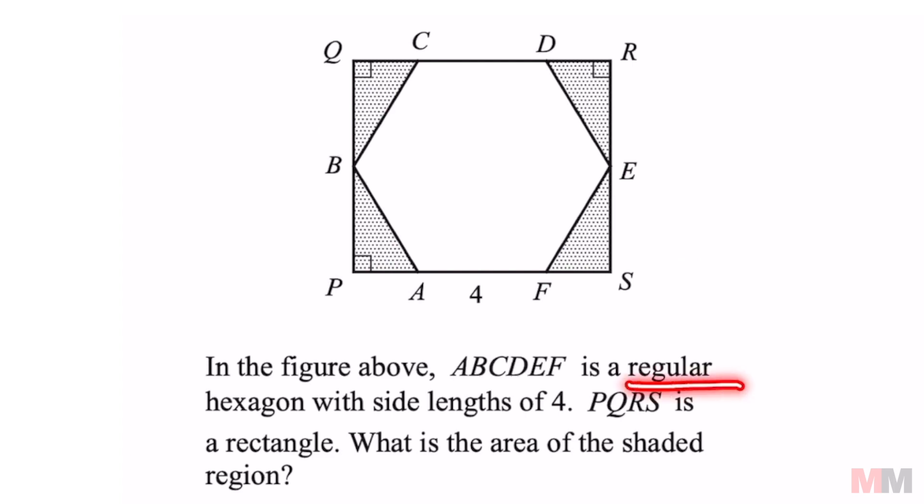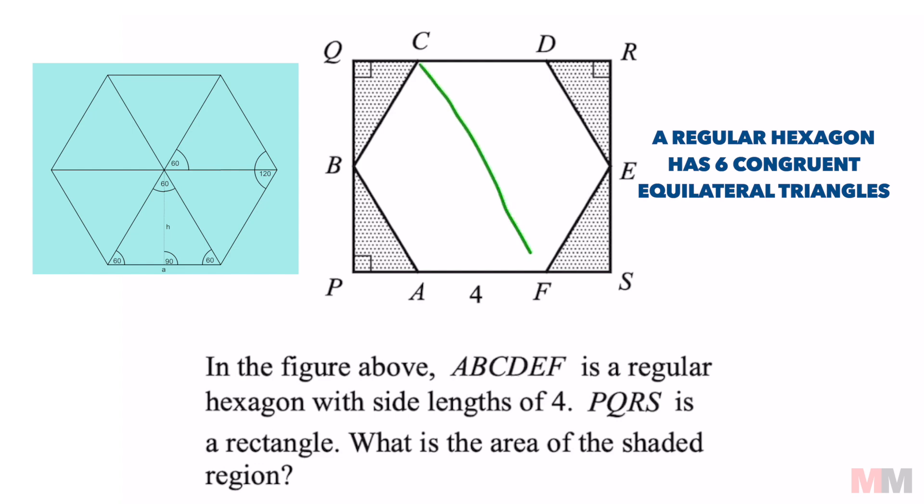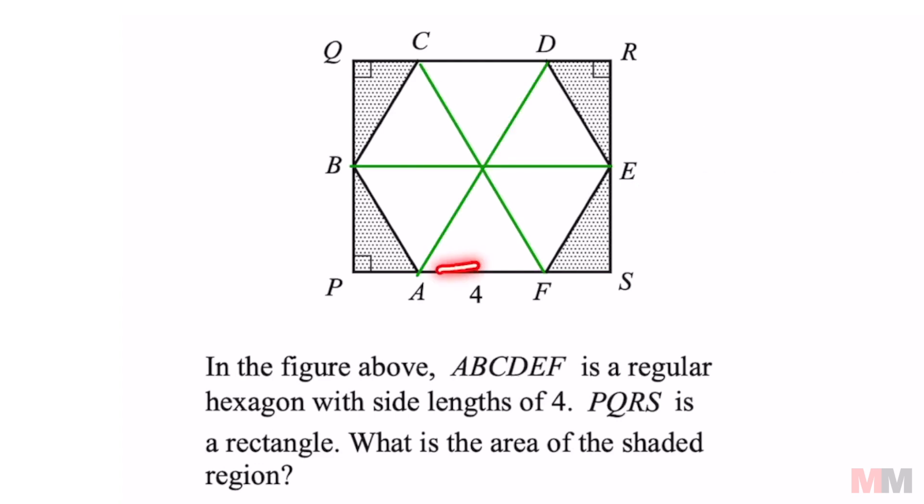First place to start, it is given that this is a regular hexagon. Inside a regular hexagon are six congruent equilateral triangles. So since these are equilateral triangles, that would mean that line segment BA is going to be four because it matches that one.